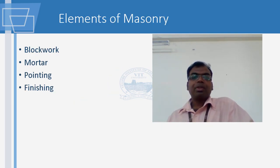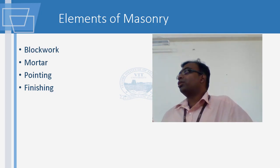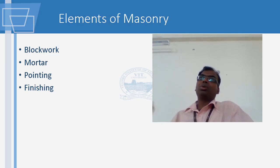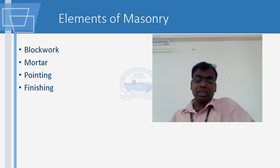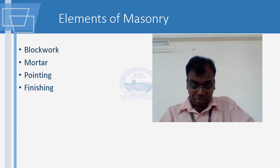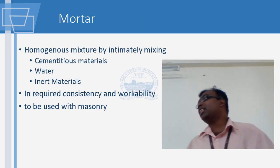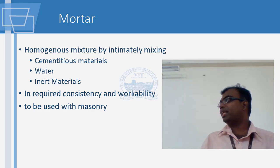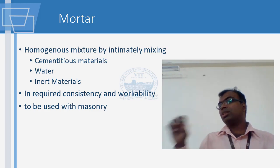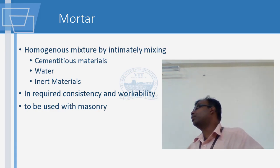You also have hollow blocks and cellular concrete. Usually, they are all done in horizontal courses - each course is a layer. They are all done in layers and they are cemented together with some kind of mortar. You have blocks, mortar, pointing work, and finishing work.